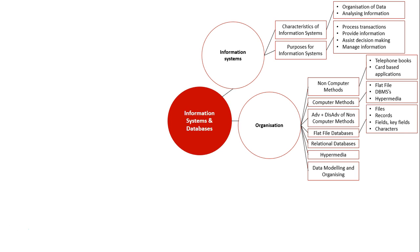A flat file database is comprised of four elements: files, which is the whole database file; records, which is each new row of data about a specific entry; fields, which are the categories of each entity; and characters, which is the smallest unit of data in the database — every individual symbol.